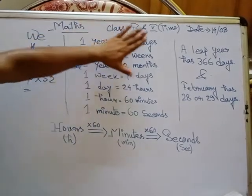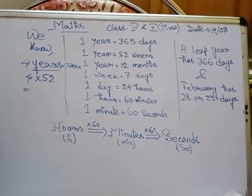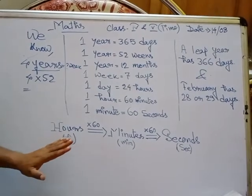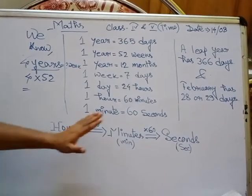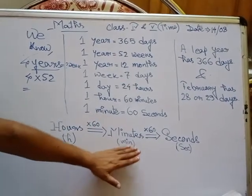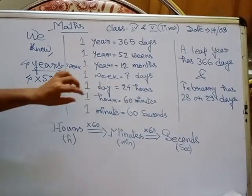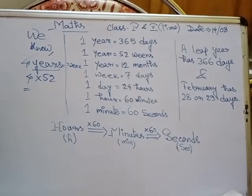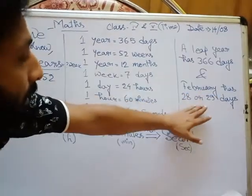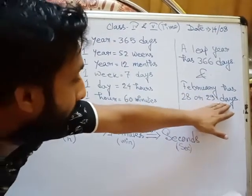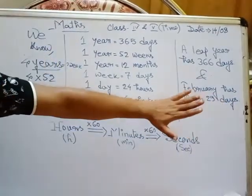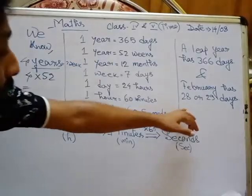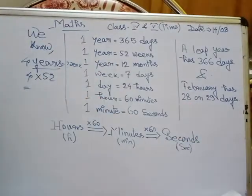First we should learn these things, after that we will convert — to convert the bigger unit to smaller unit or the smaller unit into a bigger unit. Also, February has 28 or 29 days; if it is a leap year, then 29 days, otherwise 28 days.